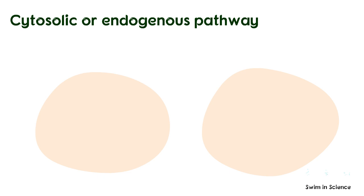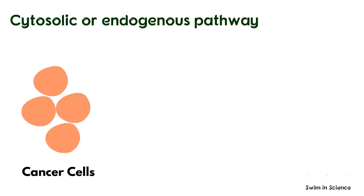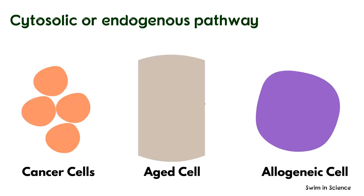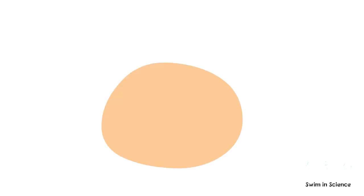Most often, target cells are cells that have been infected by a virus or some other intracellular microorganisms. However, altered self-cells such as cancer cells, aging body cells, or allogeneic cells from a graft can also serve as targets. The process is called the cytosolic pathway as it occurs in the cytosol of the cell.